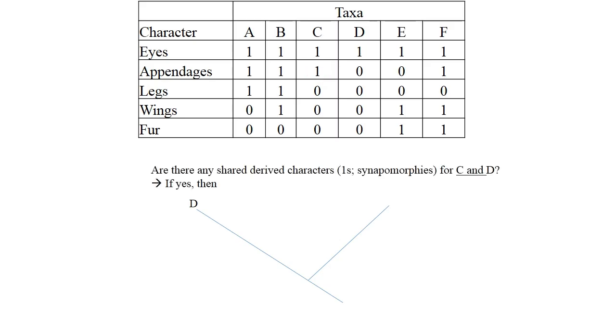We need to ask this question whether there are any synapomorphies or shared derived characters for C and D. If the answer is yes, the tree will look like this and we will put the synapomorphy on the branch that leads to D and C. If there are no synapomorphies for C and D, the tree will look like this.